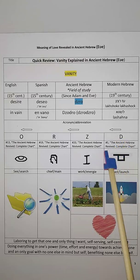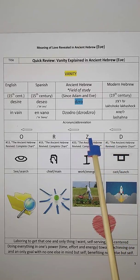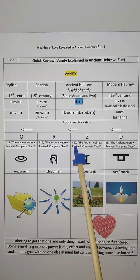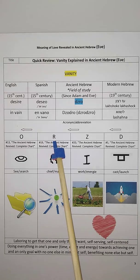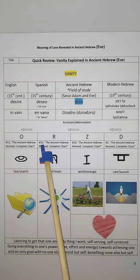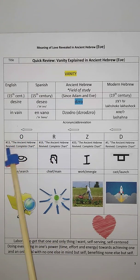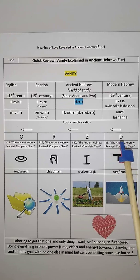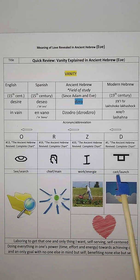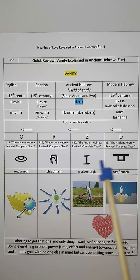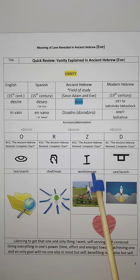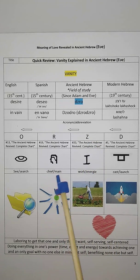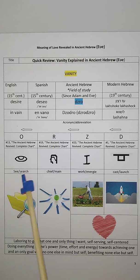Details about this letter are in our ancient Hebrew revived complete chart in number 5. Details about this letter are in number 20 of the same booklet, and details about this letter are in number 19. Details about the O are in number 13 of our ancient Hebrew revived complete chart booklet. Altogether, vanity means: the D, the Z, the R, the O — which is to cast or to launch, the D; the work or energy, the Z; the chief or main, the R; and to see or search, the O.